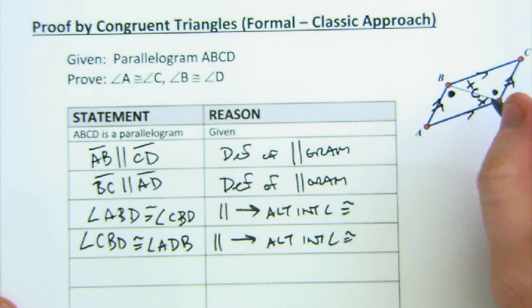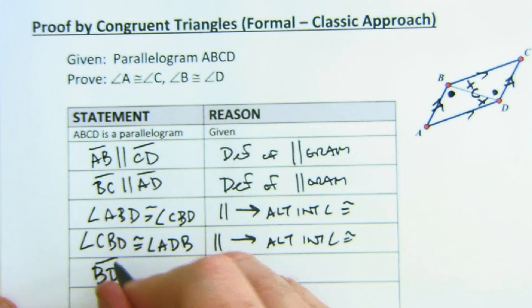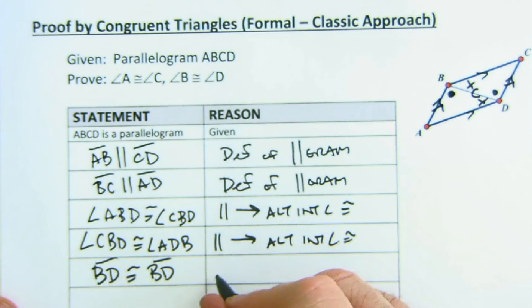Finally, I need a side. There's a beautiful little side there. It's a reflexive side. BD exists in both triangles. That's called the reflexive property. Often in shortened form, we call it a common side.